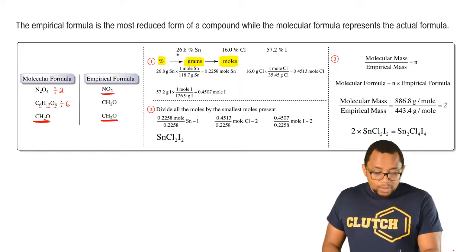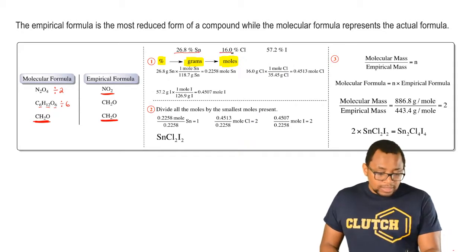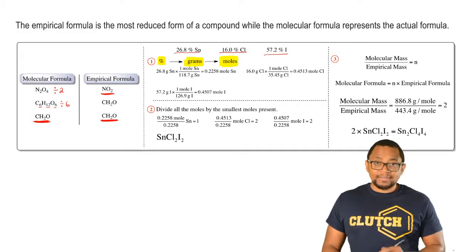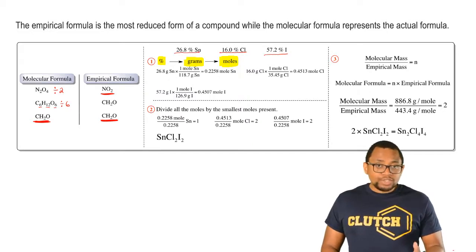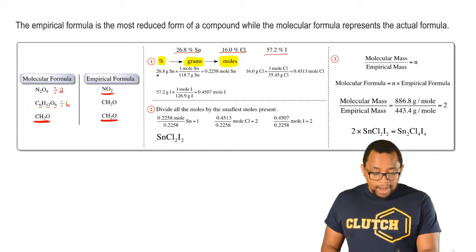Here I'm giving you 26.8% tin, 16% chlorine, and 57.2% iodine. We assume this is out of 100 grams of a compound, so automatically change these percentages into grams.